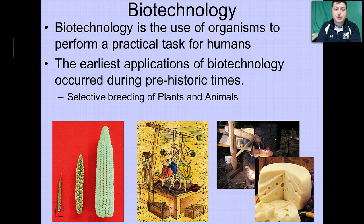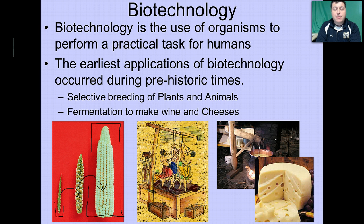For example, the ancestor of our modern ear of corn was selectively bred, choosing individuals that had the most kernels per ear of corn and allowing them to reproduce and pass that trait to the next generation. And over time, we were able to produce our modern ear of corn. Additionally, early humans needed a way to have beverages and foods that could exist without refrigeration. The discovery of fermentation allowed for this, making wines and cheeses that can exist outside of refrigeration.